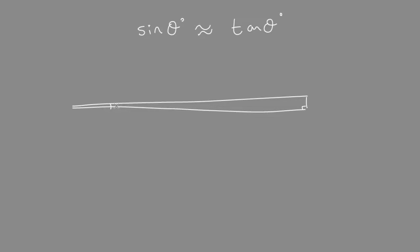For very small angles theta, you can almost see that the hypotenuse length is almost equal to the length of the base. So what that means is the ratio of tan theta — opposite over adjacent — will be similar to the ratio of sine theta — opposite over hypotenuse.